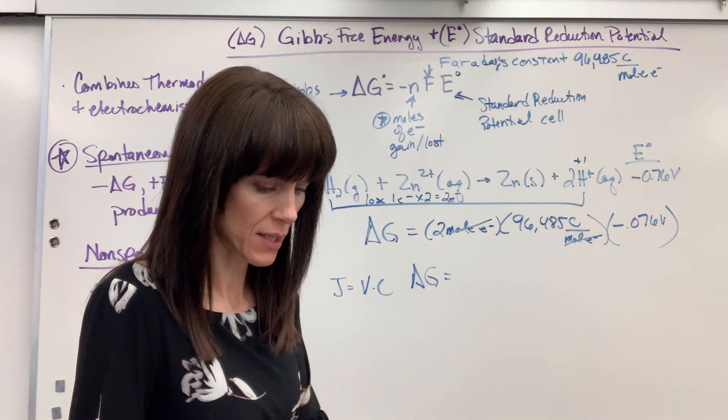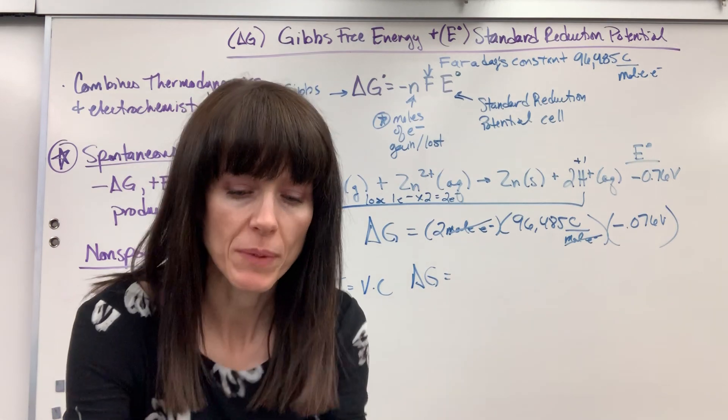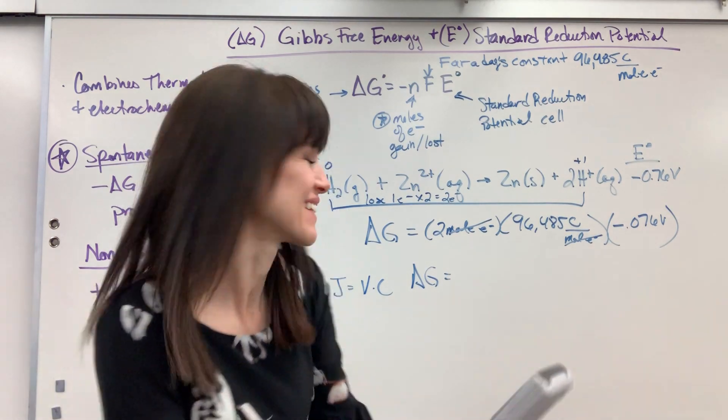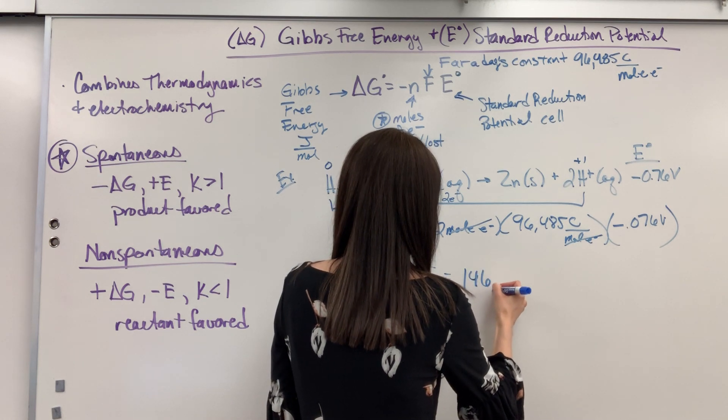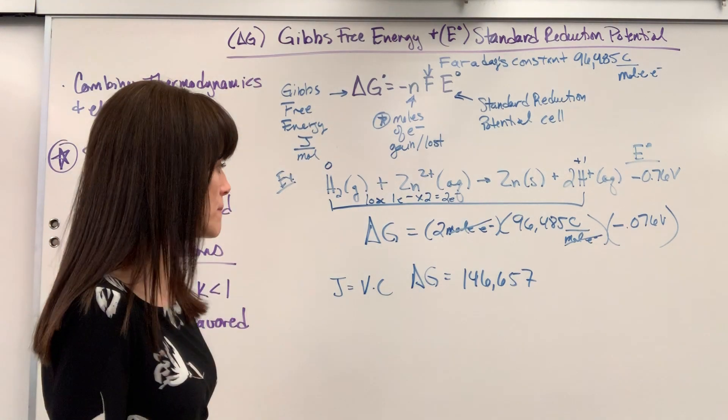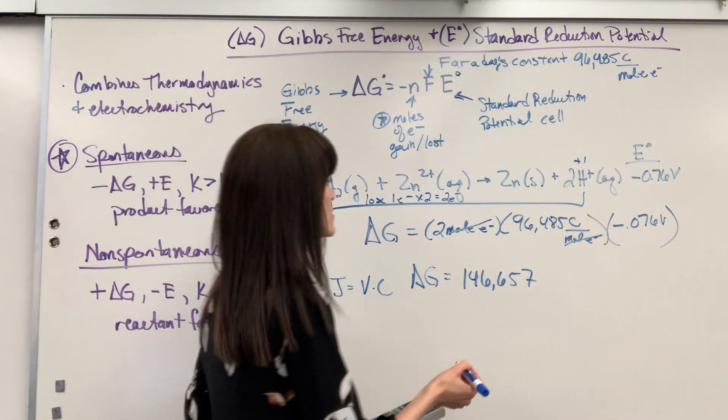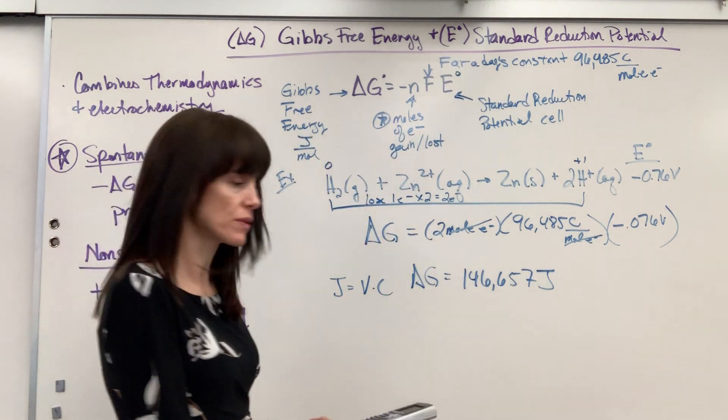When we multiply this delta G is going to equal, here it is, 146,657. I'll write all of it down, I haven't done sig figs yet. What's the unit? Joules. To convert this to kilojoules we will just take a thousand joules and one kilojoule.